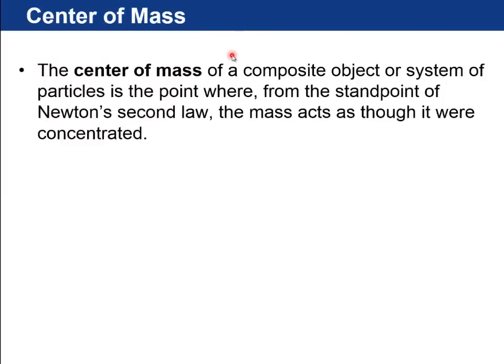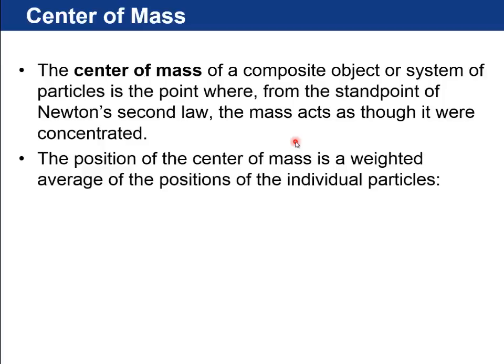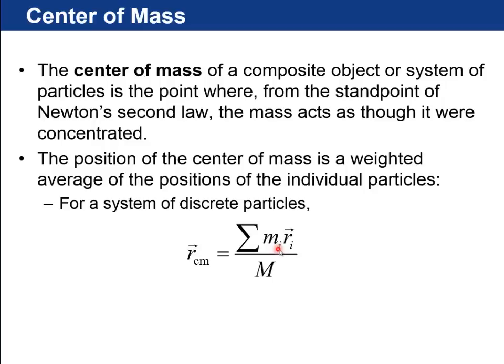The center of mass of a big object or system of particles is the point where, from the standpoint of Newton's second law, the mass acts as though it were concentrated. Newton's second law is that the external force on an object or system equals the mass times its acceleration. So the center of mass is where you can pretend that all of that mass is concentrated. And if you want to find it, it's the weighted average of the positions of the individual particles where you weight by the mass of those particles.